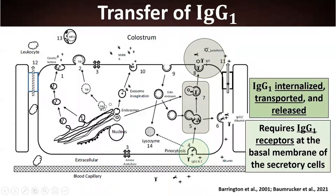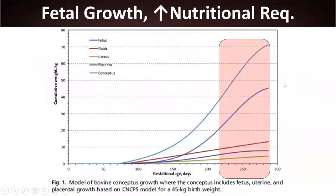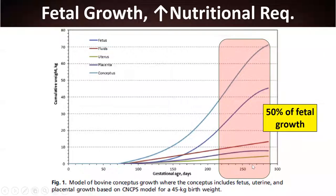This principle is called transcytosis — the movement of IgGs from the cow's blood to the alveolar lumen in the colostrum. Importantly, this is an active process: it requires energy, glucose, and calcium. This occurs simultaneously with the exponential growth of the fetus, as 50% of fetal growth happens in the last trimester. Meeting nutritional requirements at this stage is paramount for colostrum production.